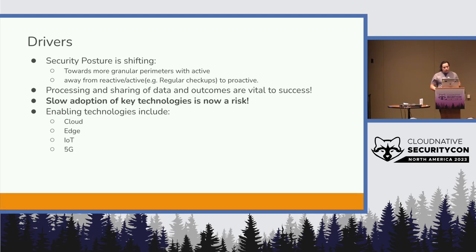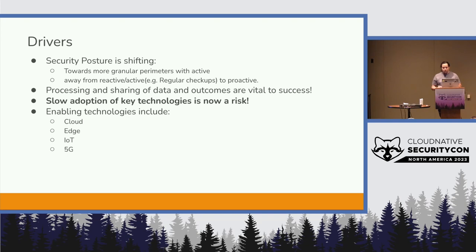Part of the drivers of what we're looking at for things like Zero Trust is that the security posture is starting to shift, where we're looking for more granular perimeters. We're looking to move away from reactive and move towards something that's actually proactive — not just responding to incidents, but working out what incidents we're seeing now and how we can actually adapt to them.